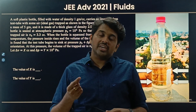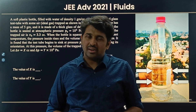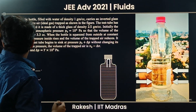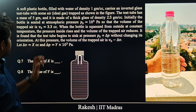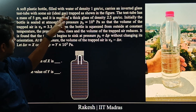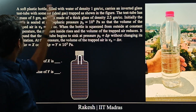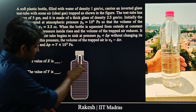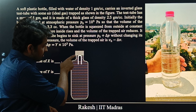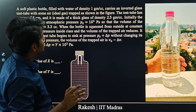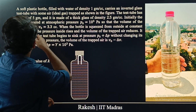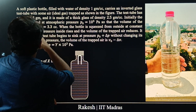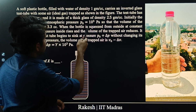Yesterday I showed you a demo of a JEE Advanced question. Today let us analyze it. A soft plastic bottle filled with water carries an inverted glass test tube with some air trapped inside. The test tube has a mass of 5 grams, and initially the bottle is sealed at atmospheric pressure.